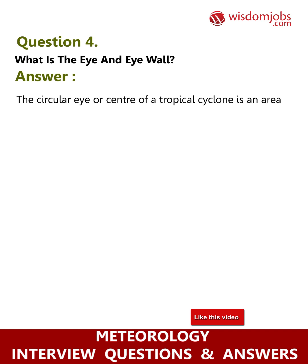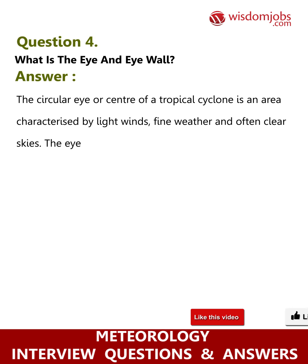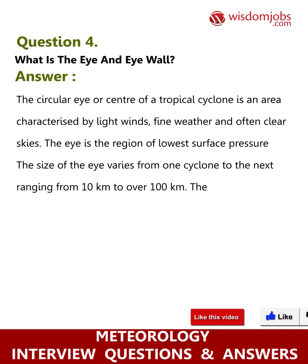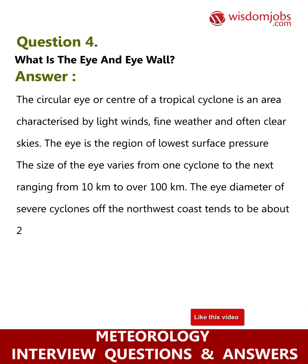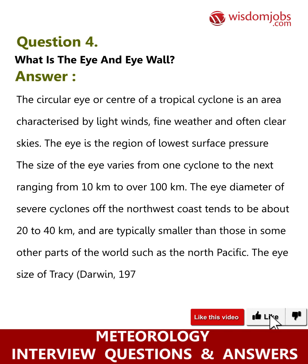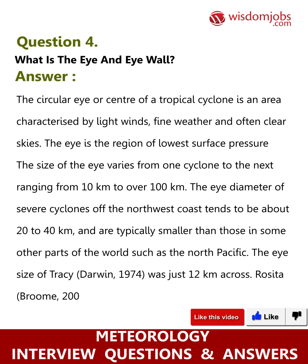Question 4: What is the eye wall? The circular eye or center of a tropical cyclone is an area characterized by light winds, fine weather, and often clear skies. The eye is the region of lowest surface pressure. The size of the eye varies from one cyclone to the next, ranging from 10 kilometers to over 100 kilometers. The eye diameter of severe cyclones off the northwest coast tends to be about 20 to 40 kilometers. The eye size of Tracy (Darwin, 1974) was just 12 kilometers across, and Rosita (Broome, 2000) only had an eye diameter of 20 kilometers.